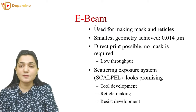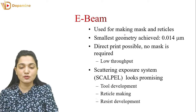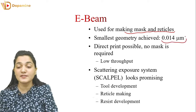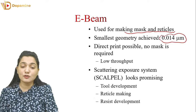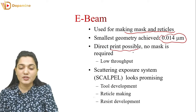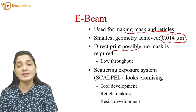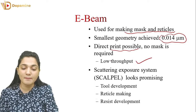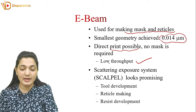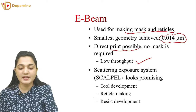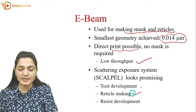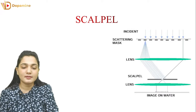What is Electron Beam? The Electron Beam is a beam of electrons. It is used for making masks and reticles. With the help of Electron Beam Lithography, we can get 0.014 micrometer resolution. Direct printing is possible here and no mask is required, so all the drawbacks are compensated. Throughput is reduced but output resolution is increased. We are using a Scattering Exposure System — the SCALPEL System. We will discuss tool development, reticle making, and resist development in this section.